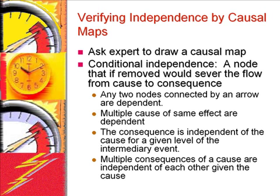These rules include the following. Any two nodes connected by an arrow are dependent. Cause and immediate consequence are dependent. Multiple causes of the same effect are dependent, as knowing the effect of one cause will tell us more about the probability of other causes. If a cause leads to an intermediary event that subsequently affects a consequence, then the consequence is independent of the cause for a given level of the intermediary event. If one cause leads to multiple consequences, the consequences are conditionally independent of each other given the cause. Two events are conditionally independent if removing the condition actually removes the path between the independent events — that is, event C is between events A and B and there is no way of following the arcs from A to B without passing through C.